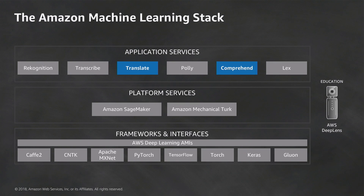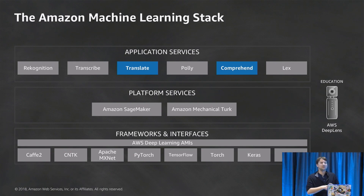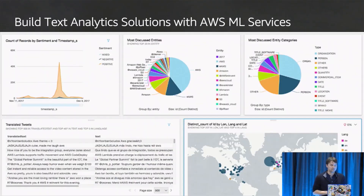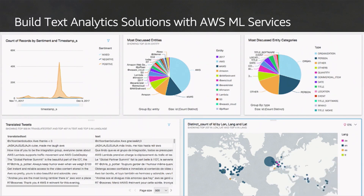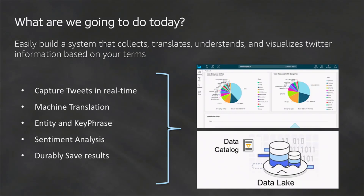Today we're talking primarily about Translate and Comprehend. We're going to take tweets coming in in any language, translate them into English, run Comprehend on them, and generate a dataset of the average sentiment of the item we're tracking. This is a QuickSight dashboard that we're going to build — we'll grab all these incoming records and track topics like AWS, AWS re:Invent, and Amazon. You can see the translated text at the bottom.